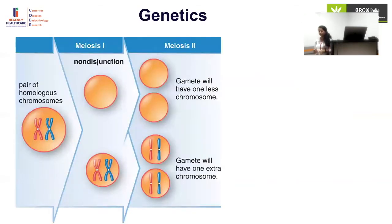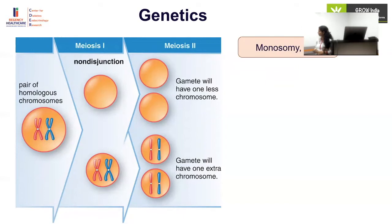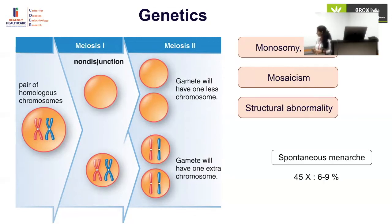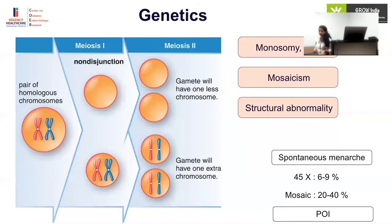The main genetic abnormality in Turner syndrome is non-disjunction at meiosis stage one, leading to gametes that lack an X chromosome. Fertilization with these gametes can lead to monosomy or other abnormalities like mosaicism or structural abnormalities such as isochromosome. Many Turner syndrome patients can develop spontaneous puberty, but spontaneous menarche occurs in only 6–9% of females with 45,X, while 20–40% of mosaic Turner can develop it spontaneously. The major event is premature ovarian failure.